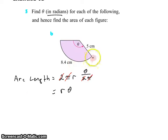We know the arc length here is 8.4 cm. So the arc length is 8.4, and the radius of the circle is 5 cm. That means that theta is 8.4 divided by 5, and when you punch that into your calculator, it works out to 1.68, and that answer's in radians.